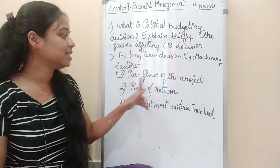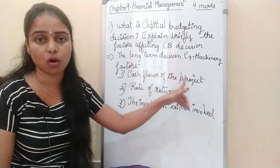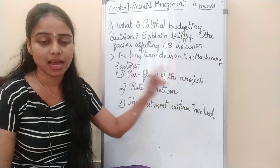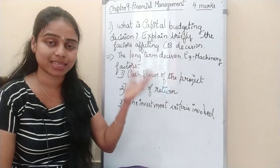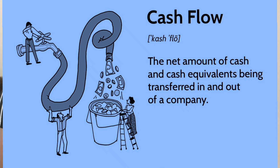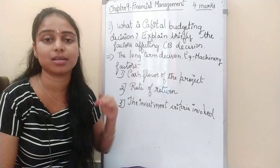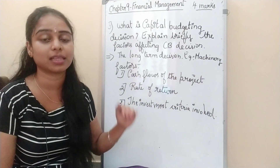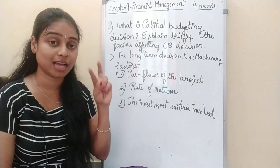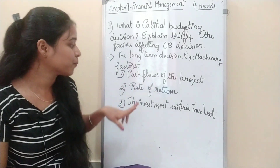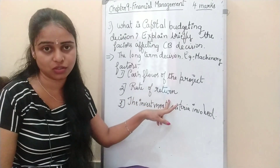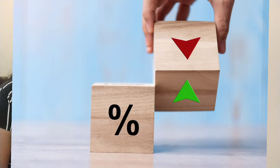Now, what are the factors affecting capital budgeting decisions? The first one is cash flows of the project. We have to consider both cash inflow and cash outflow — how much cash we are paying and how much return we are getting from it.